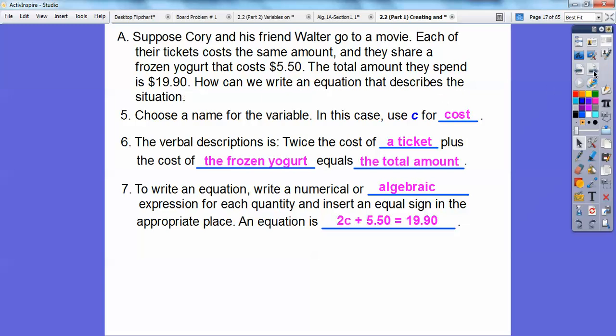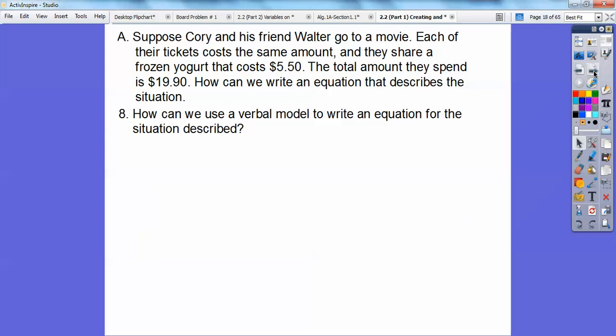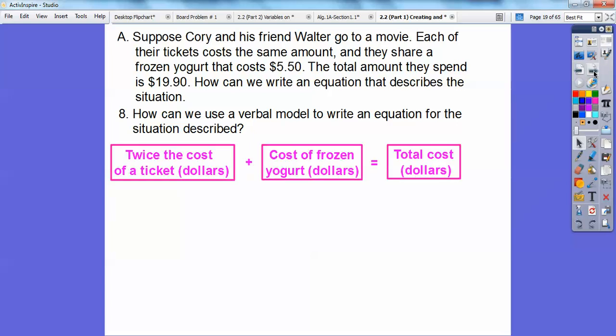To write an equation we write a numerical or an algebraic expression for each quantity and insert an equal sign because of the word is in the appropriate space. So the equation is going to be, well since we have two tickets that we're going to have and each ticket costs C, we're going to have 2C plus the $5.50 for the yogurt is going to equal the total cost of $19.50. There's our equation right there.